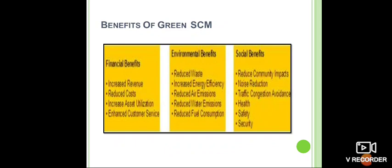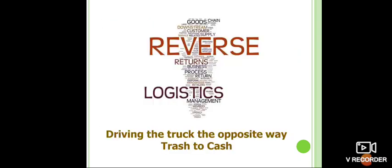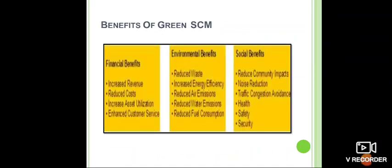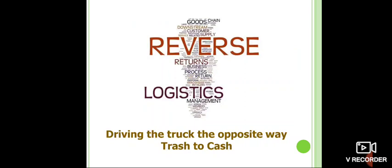The benefits of green supply chain management fall into three categories: financial, environmental, and social. Financial benefits include increased long-term revenue and reduced costs. Environmental benefits include reduced waste, increased energy efficiency, reduced air and water emissions, and reduced fuel consumption. Social benefits include long-term gains in health and safety, security, noise reduction, and less pollution.